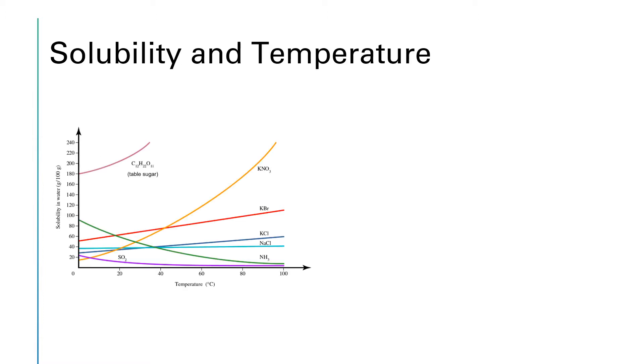This graph from your textbook shows how the solubility of various substances changes with temperature. The vertical axis of this graph is showing the solubility in water. The units that are used are a little bit weird. They are grams of solute per 100 grams of water.